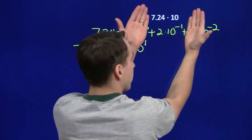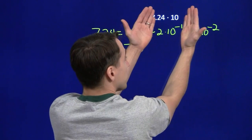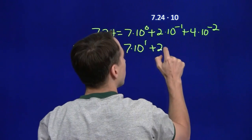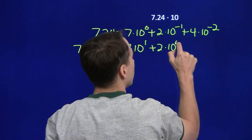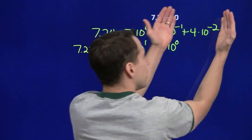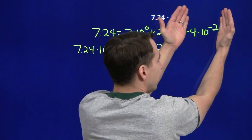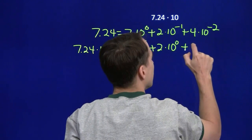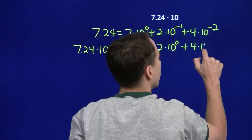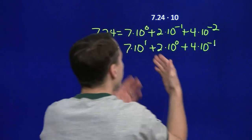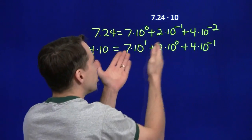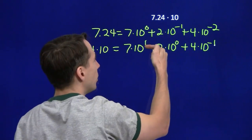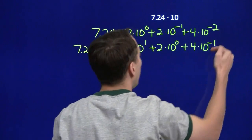We multiply the next term by 10: 10 to the minus 1 times 10 to the 1st gives us 10 to the 0. And the last term, 10 to the minus 2 times 10 to the 1st — minus 2 plus 1 — gives us 10 to the minus 1. All we're doing is increasing the exponent in each power of 10 by 1.